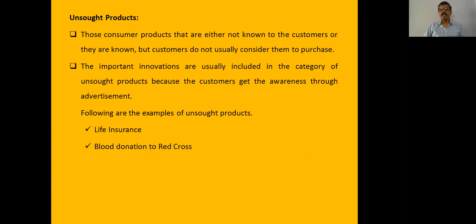The fourth category is unsought products. These are products which we do not want to buy but are supposed to buy. For example, life insurance products — we are not eager to buy them, but need and necessity drive us to purchase them.